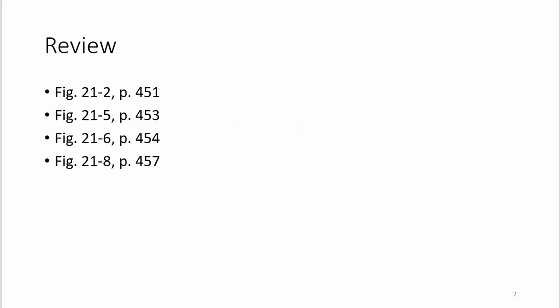This is Process of Human Diseases 1, Unit 7 on Respiratory Disorders. To start out with, we're going to review a little bit about the anatomy of the respiratory system.